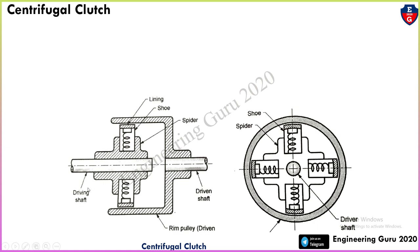The main parts are: this is the driving shaft, this is the driven shaft. This part is called the rim or pulley. This part is called the lining. This is the shoe, and this is the spider. This is the top view of the centrifugal clutch. The engagement is possible with the help of centrifugal force.